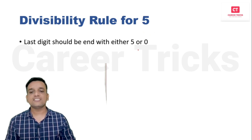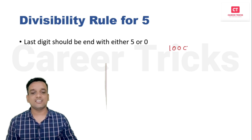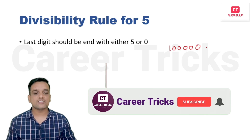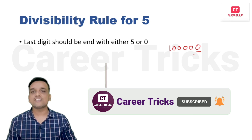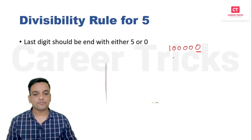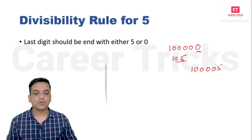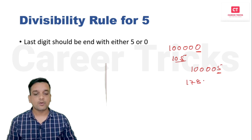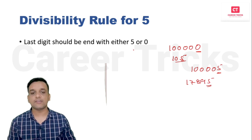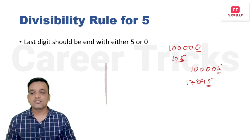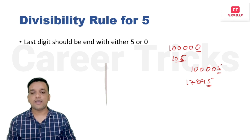Divisibility rule for 5 is very easy. If you take any number — 100,000 or 10,000 — and the unit digit is 0, it is divisible by 5. Or if the unit digit is 5, like 105 or 17895, it is also divisible by 5. Remember: if the unit digit is 0 or 5, the number is divisible by 5.